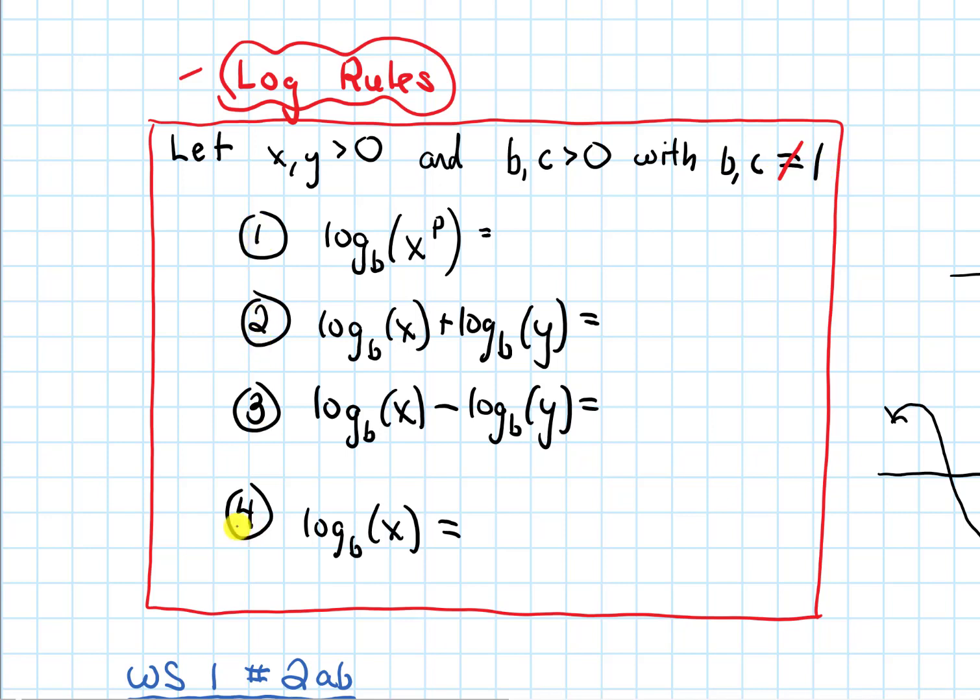So there's four main log rules. The first one says if you have log base B of x to a power P, you can take that power and move it in front and get P times log base B of x.